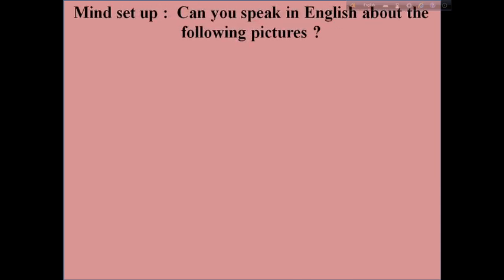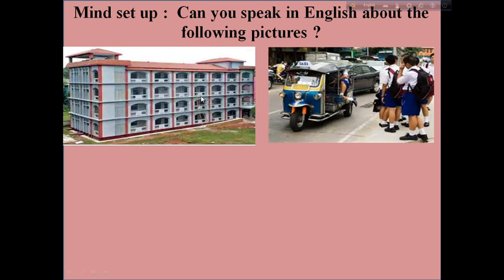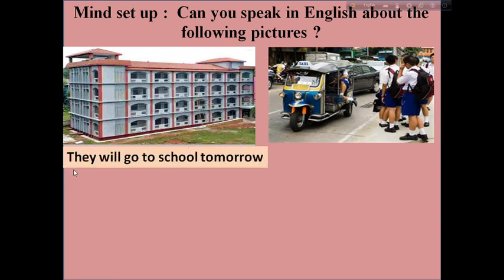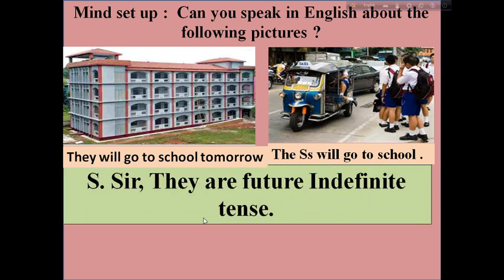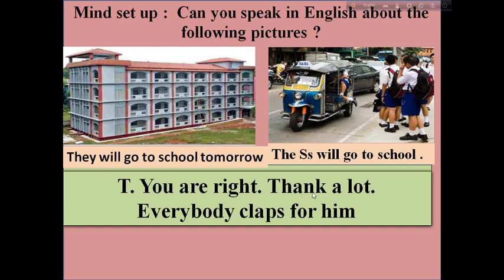Dear students, can we speak in English about the following? You can look at two pictures here — one is for the school and the other is the way to school. They will go to school tomorrow, and the students will go to school. Can you say what kind of tenses are these? Very good. They are future indefinite tense. Thank you all. You are right. Let's clap for all.